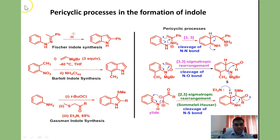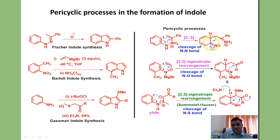In this way we have learned two important reactions: Bartoli indole synthesis and Gassman indole synthesis. In both cases what is important is a sigmatropic rearrangement. In Gassman indole synthesis, a sulfur ylide is involved, proceeding through a 2,3-sigmatropic rearrangement, whereas in Bartoli indole synthesis it is a 3,3-sigmatropic rearrangement. In all these processes, a carbon-carbon bond is established and the heteroatom-heteroatom bond — particularly nitrogen-oxygen or nitrogen-sulfur — is cleaved.